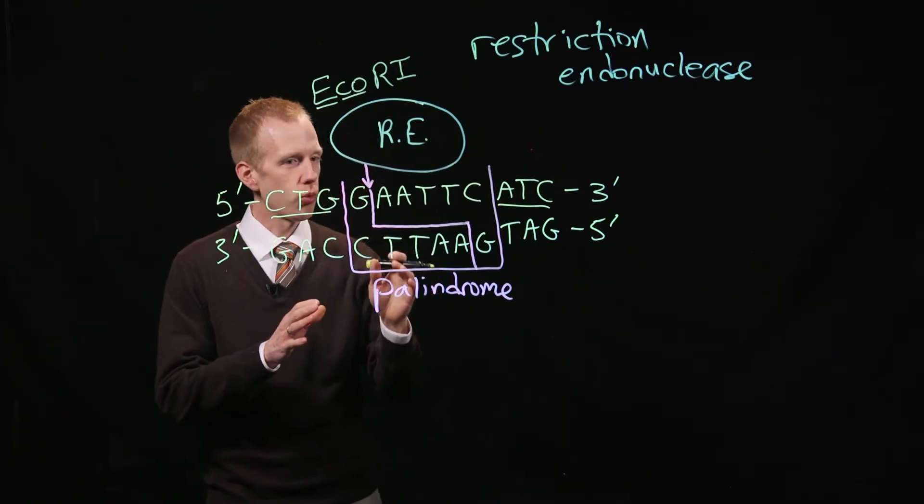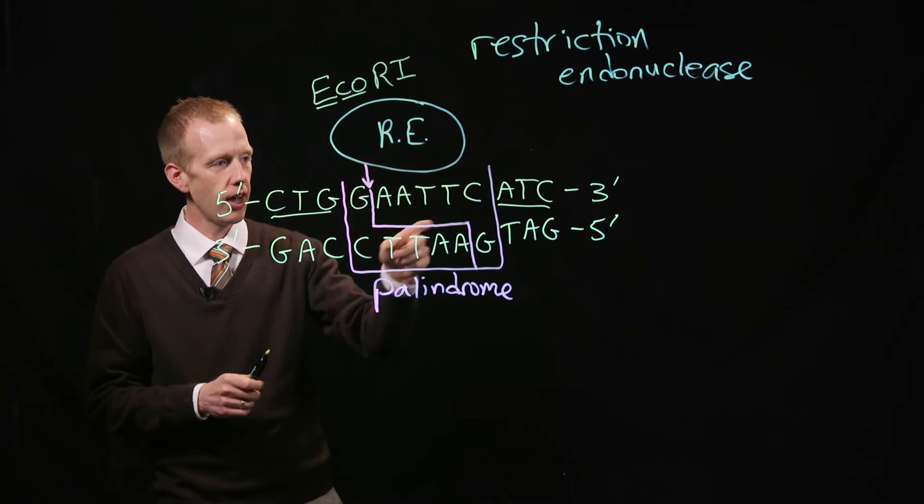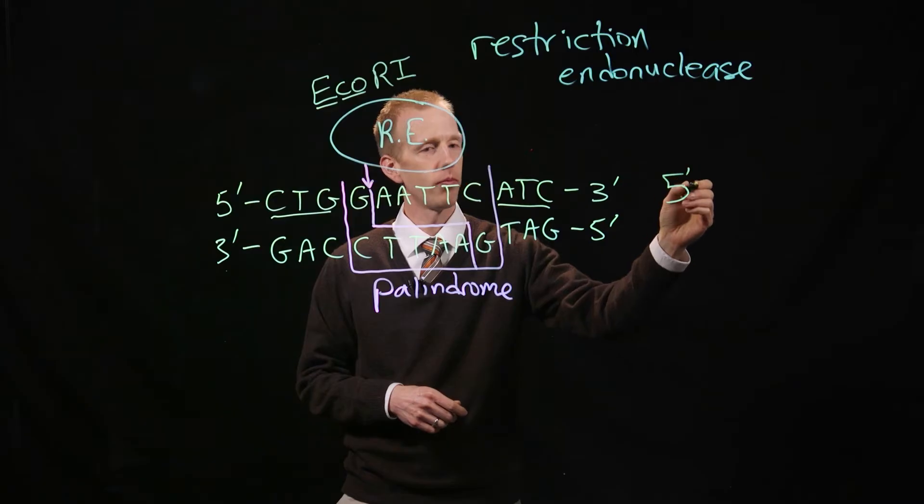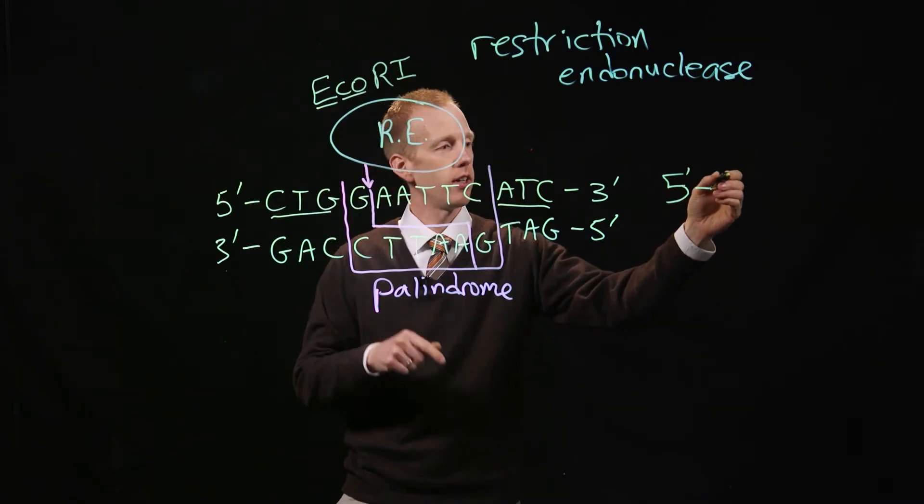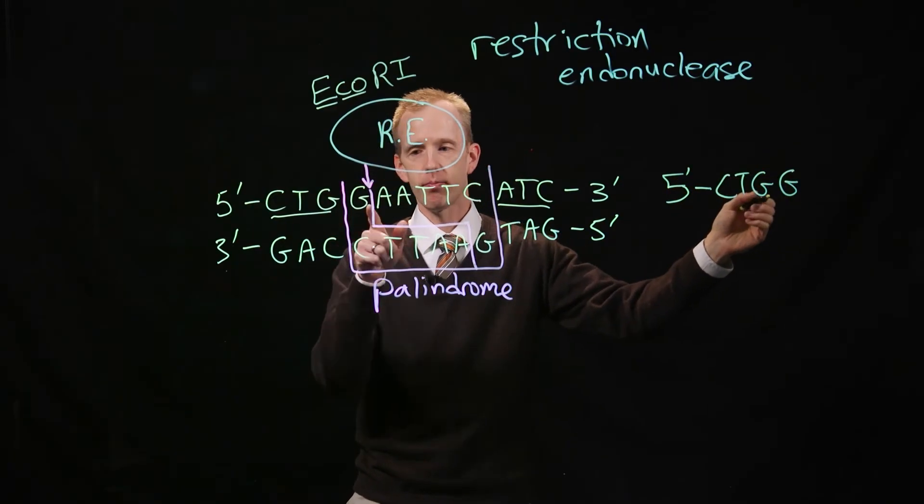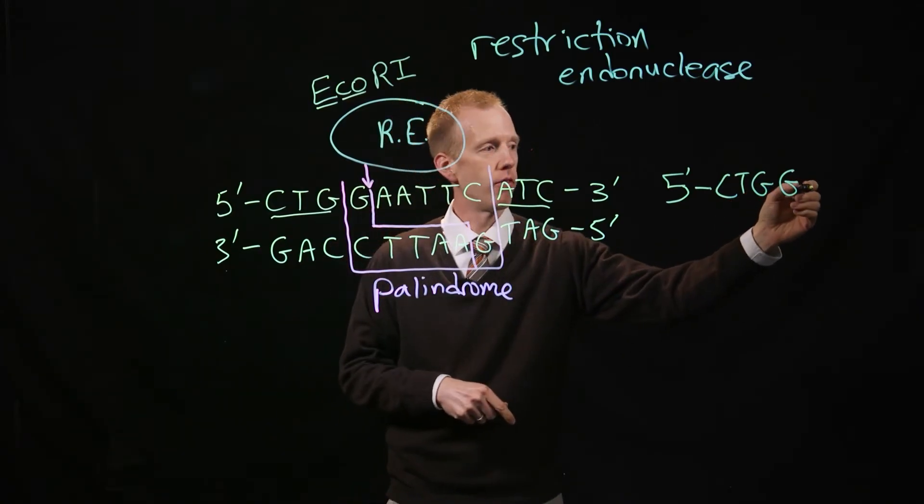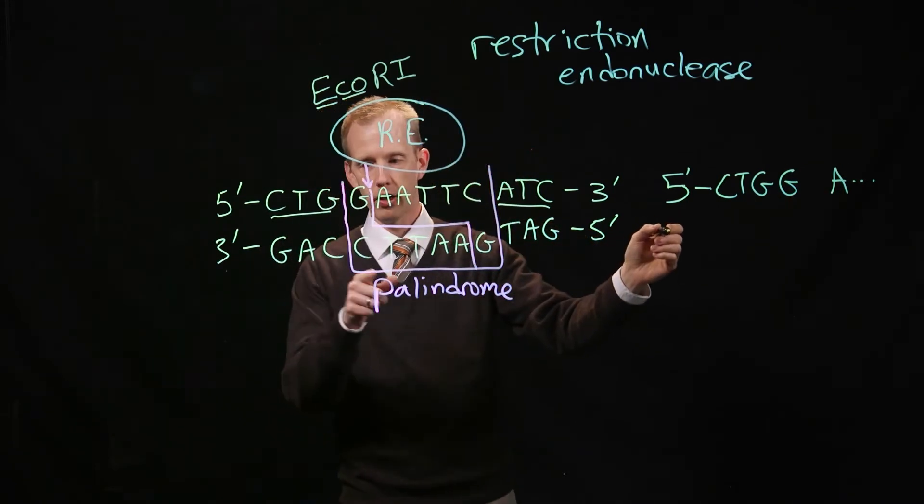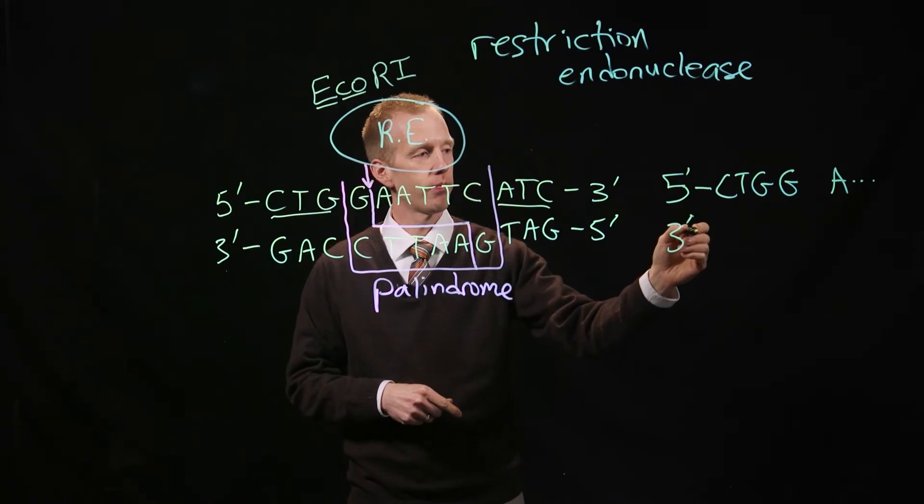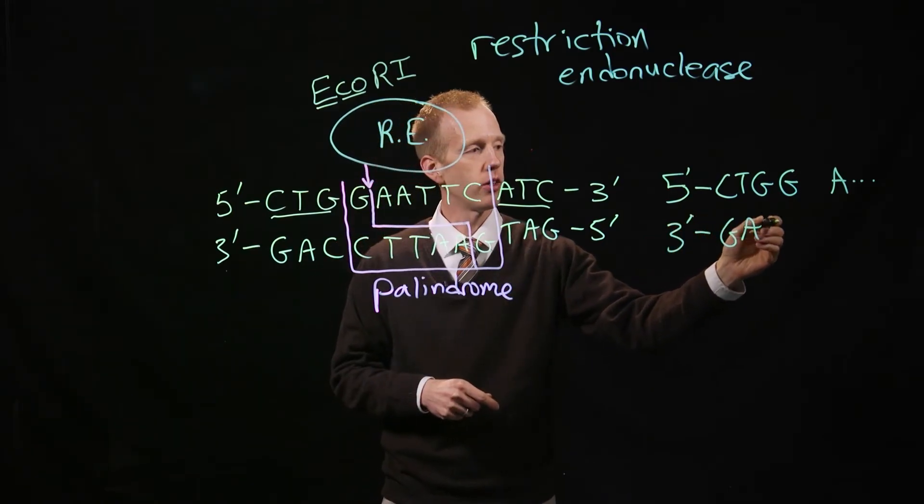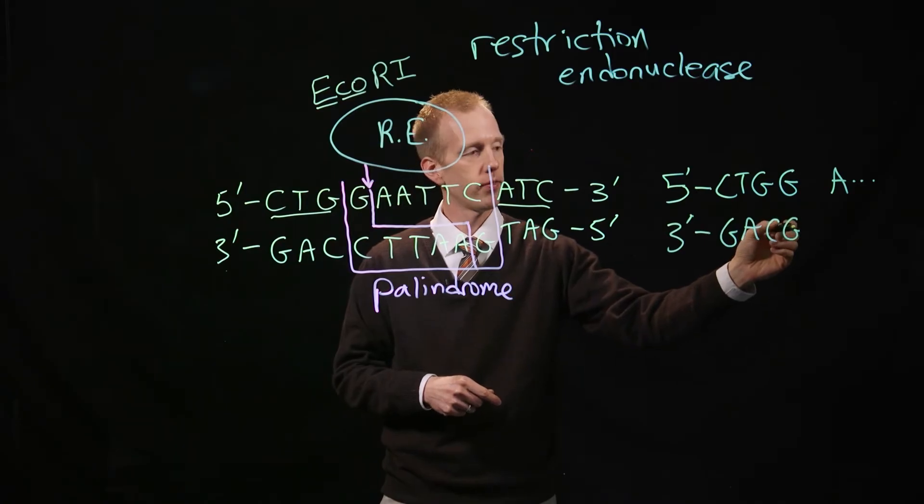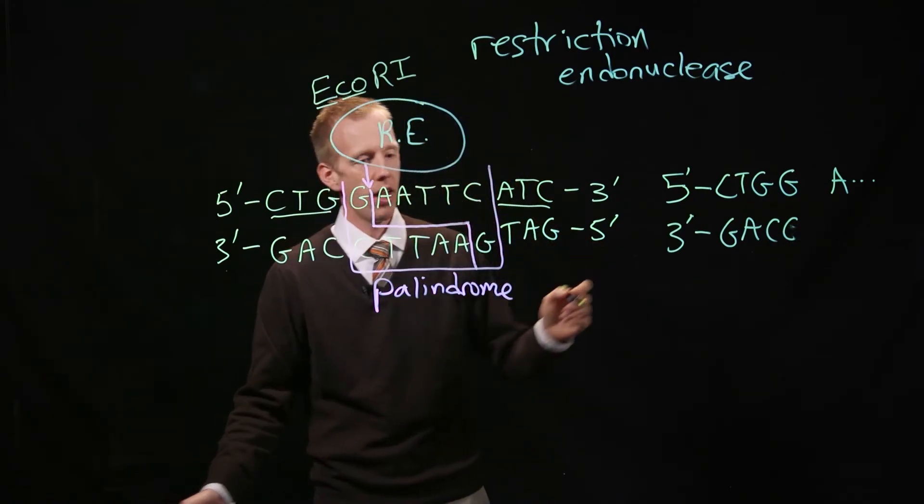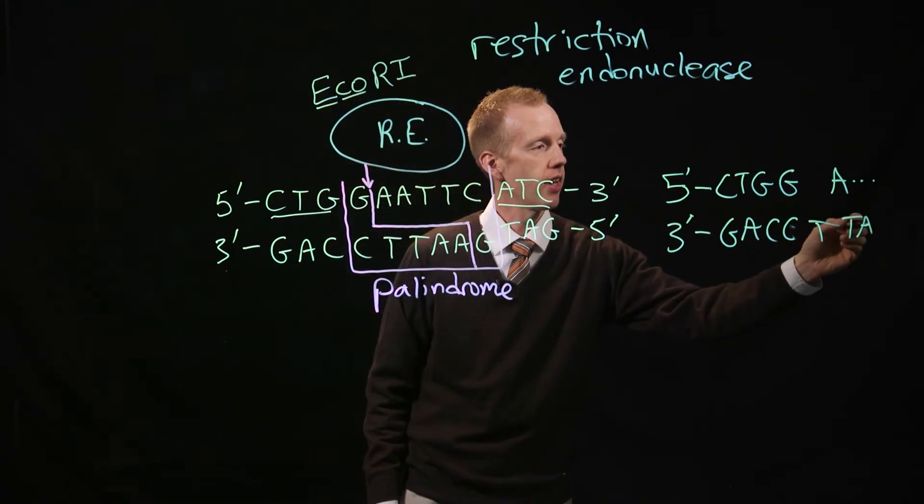Now this enzyme produces what we call sticky ends. Once this cut is made, you can see that one DNA strand from 5' will have C-T-G-G, then there's a break, and then we have the rest of the sequence, A, and so on. If we look at the other strand, looking left to right from the 3' end, we have the base pairing, G-A-C-C.